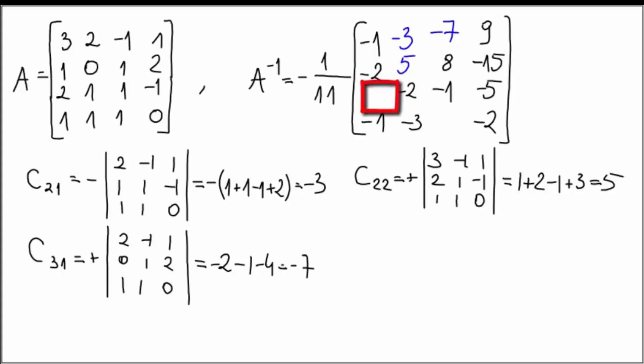Now third row, first column, which means C1,3. We reverse the order again because it's a transpose. 1 plus 3 is 4, so it's a plus. Remove first row, third column from the matrix A, of course. Copy the remaining submatrix. And now, again, simple arithmetic. That's a 3, and fill it in.